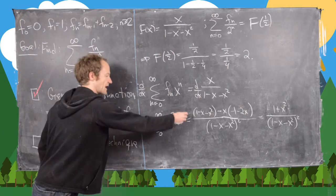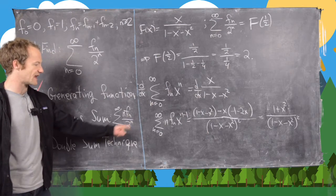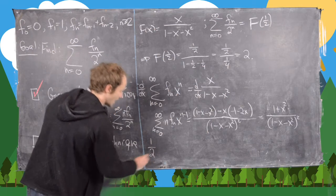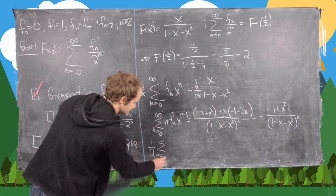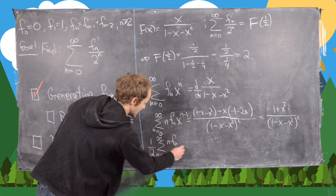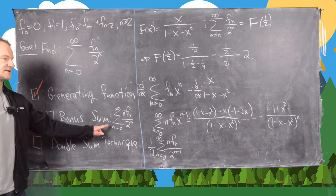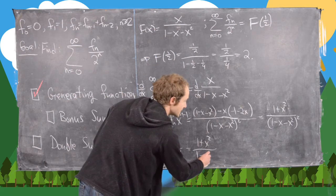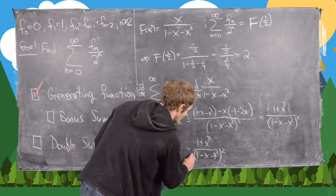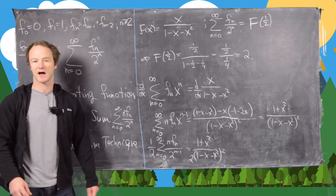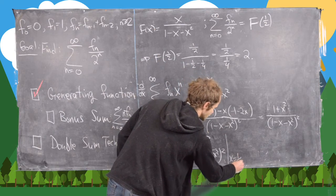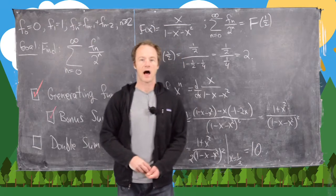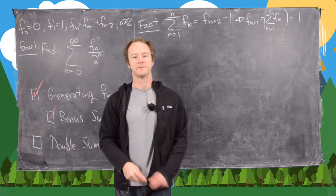That derivative simplifies to (1 + x²)/(1 - x - x²)². Since our goal sum has 2^n in the denominator rather than 2^{n-1}, we multiply by 1/2. Evaluating at x=1/2 gives the answer 10. That completes the bonus sum.